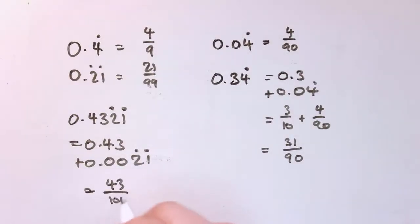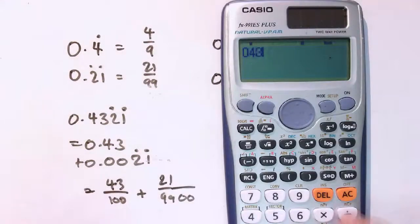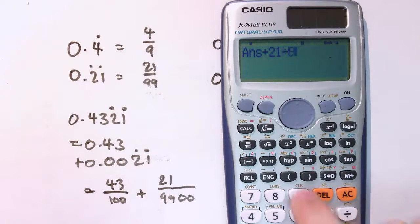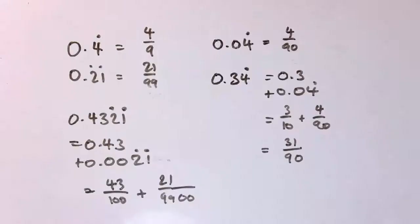If I wanted to have 0.4321 recurring, I could say that's 0.43 plus 0.0021 recurring. So this is 43 hundredths plus, and this would be 21 over 99 if it was just 0.00 that, but it's two zeros so I've divided by 100, so that would be 21 over 9900. Then you could combine those fractions into a single one, which I'll just do with the calculator. That would give us 713 over 1650.